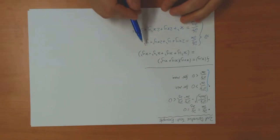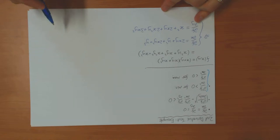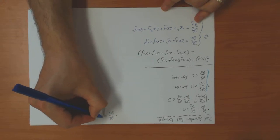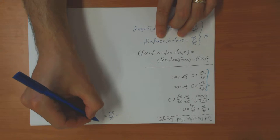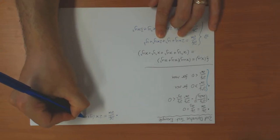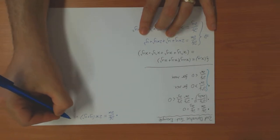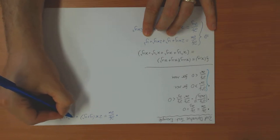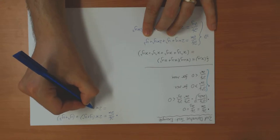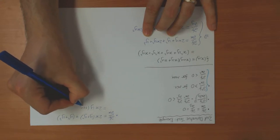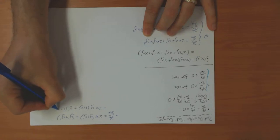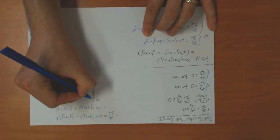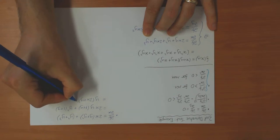Now we need to find when these are equal to zero. Starting with df/dx: I can take 2x out of the first two terms to get 2xy + y², and take y² out of the remaining two terms to get y + y³. This factorizes as y(2x + y)(1 + y).